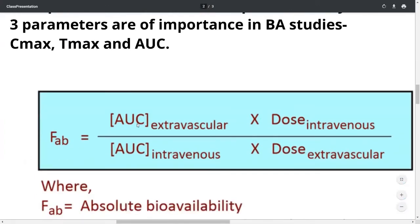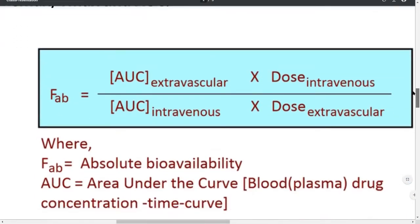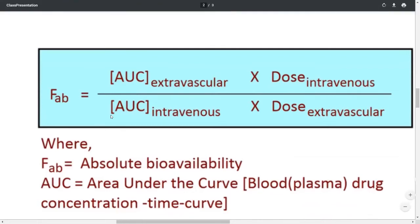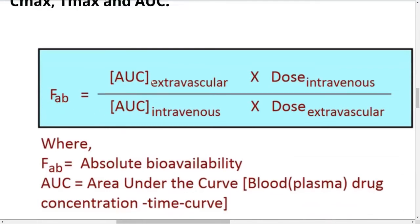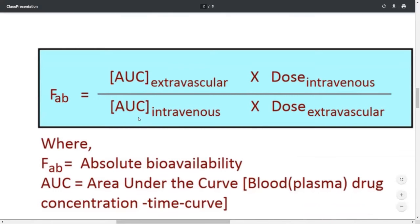As seen in our last lecture, F(a,b) stands for absolute bioavailability and is given by AUC extravascular divided by AUC intravenous. When the doses differ, the formula becomes AUC extravascular multiplied by dose intravenous, divided by AUC intravenous multiplied by dose extravascular.